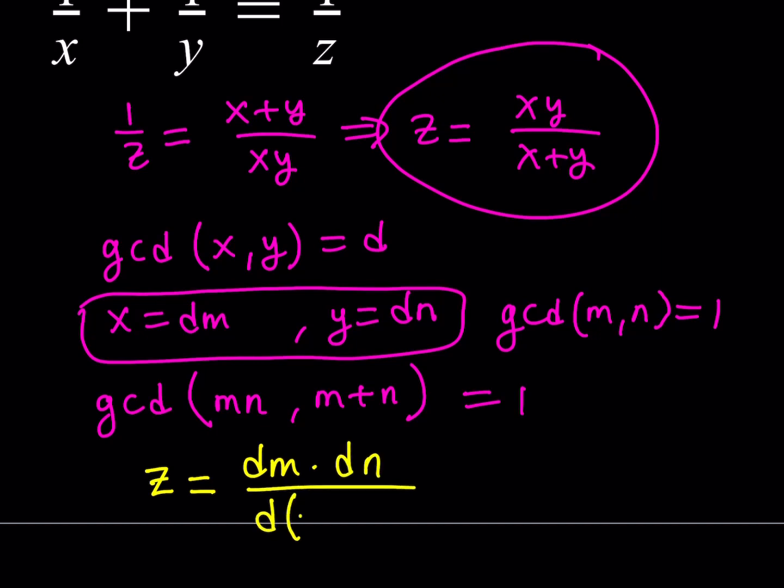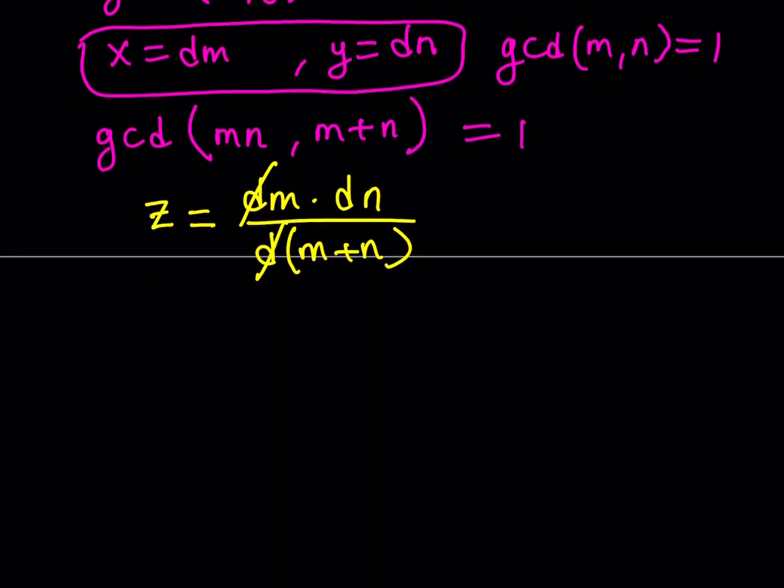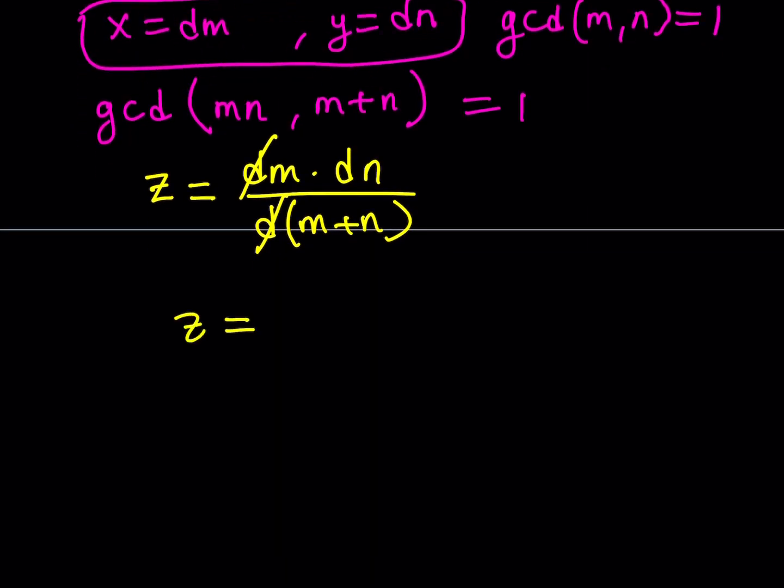So, I'll be getting something like d times the quantity m plus n. Obviously, one of the d's is going to cancel out, and we're going to get something simpler. So, now, let's go ahead and write this down. Rewrite it, actually. So, I'm going to write it as dmn divided by m plus n.